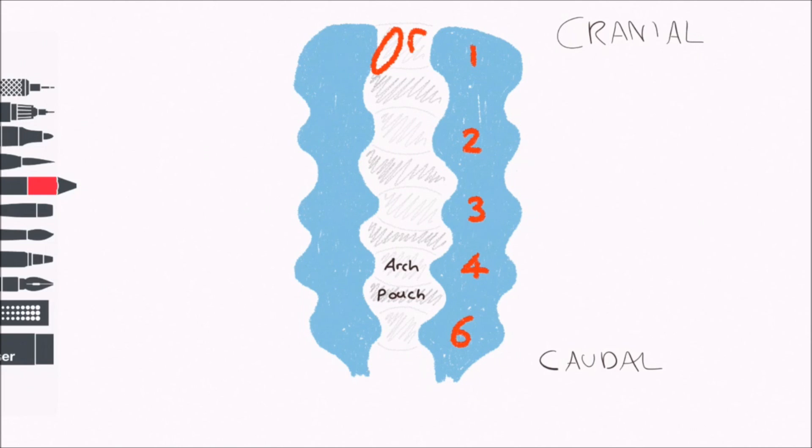The anterior two-thirds of the tongue develops from two symmetrical lateral lingual swellings and one medial swelling, the tuberculum impar. These all originate from the first pharyngeal arch.